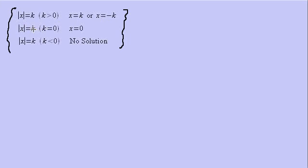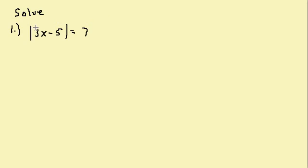When k is zero, we take what's inside the absolute value and set it equal to zero and solve. And if we have the absolute value of x equals k when k is less than zero, or k is negative, then that's no solution. Let's look at some problems.